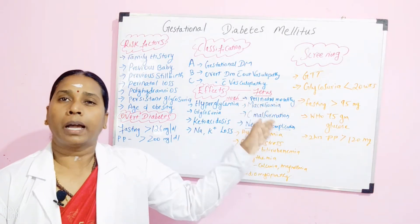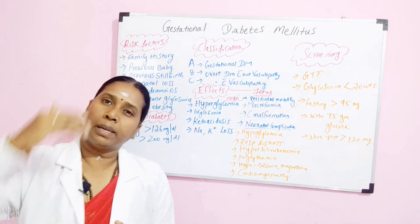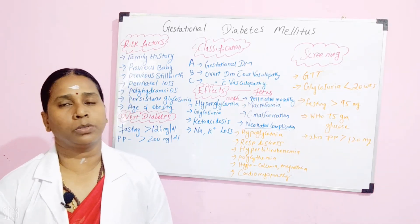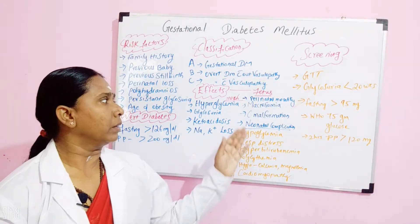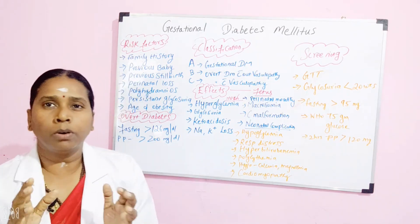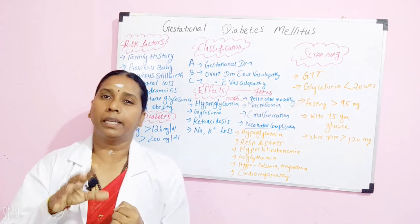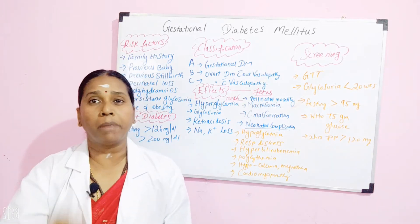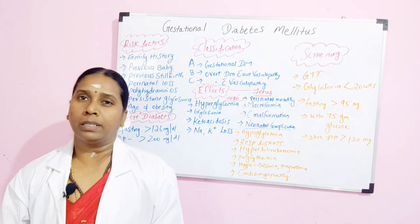The effects of diabetes on the fetus include: perinatal mortality — there can be a loss of pregnancy at any time in the first or second trimester when there is gestational diabetes. Then macrosomia, which means big baby. When the mother has diabetes, carbohydrates get deposited in the baby's organs as well, so the baby also puts on weight and you will see macrosomia in a gestational diabetic mother.